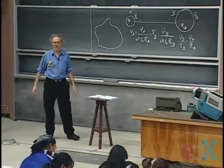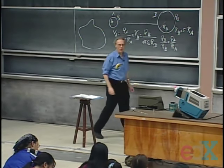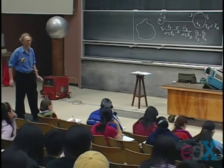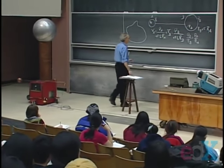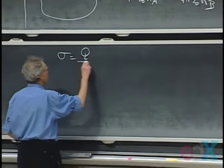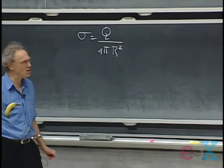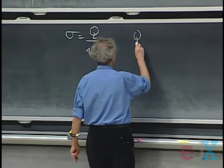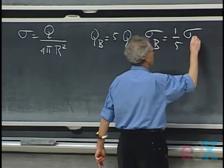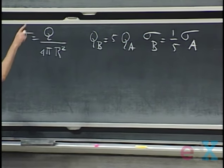If the radius of B were five times larger than the radius of A, there would be five times more charge on B than on A. But if B has a five times larger radius, its surface area is twenty-five times larger. Since surface charge density σ is the charge divided by the surface area, if the radius of B is five times larger than A, the charge on B is five times that of A, but the surface charge density on B is only one-fifth of A's, because its area is twenty-five times larger.